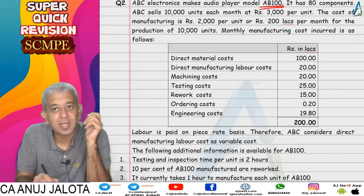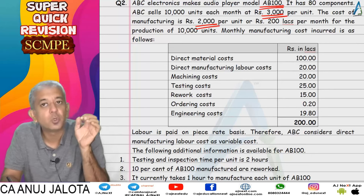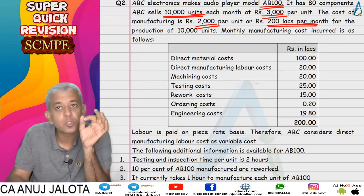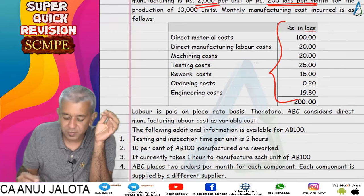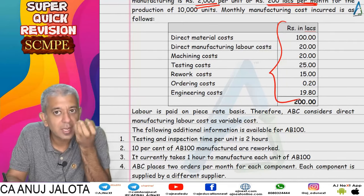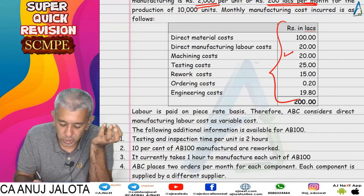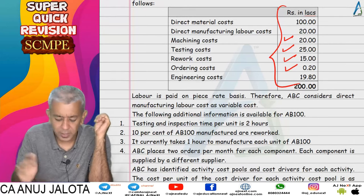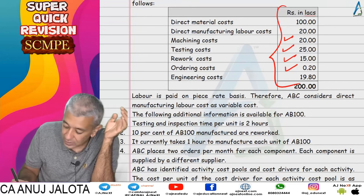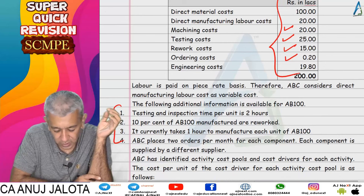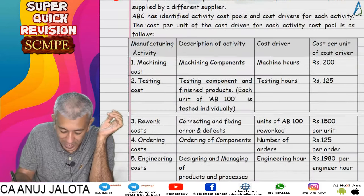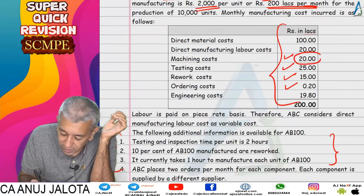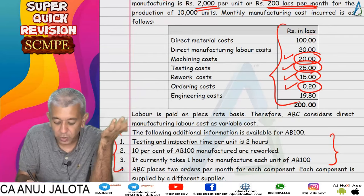Question number two: the company makes a product called AB100, selling price 3000, cost 2000 per unit, producing 10,000 units per month. Total cost is 200 lakhs, whose breakup includes direct material cost, direct manufacturing labor cost, machining cost, testing cost, rework cost, ordering cost, and engineering cost. A lot of extra data was given to verify these individual cost figures.